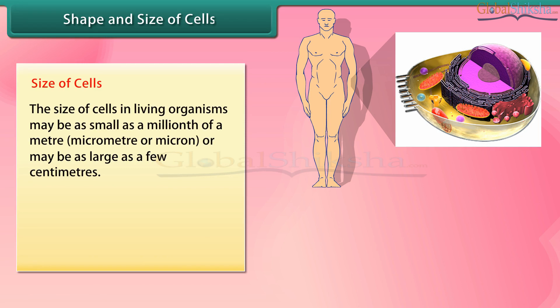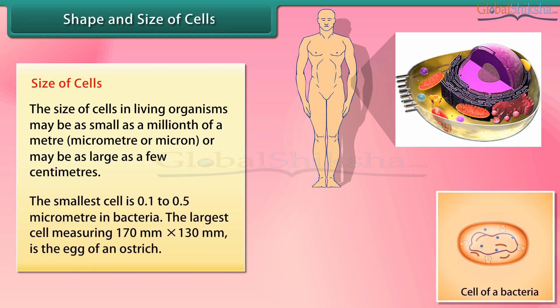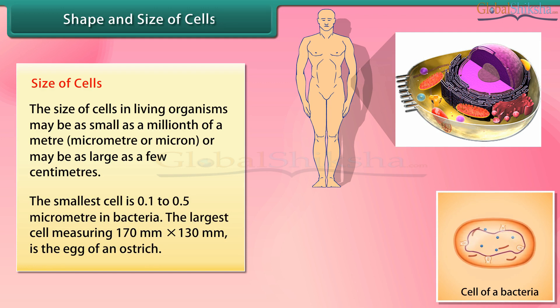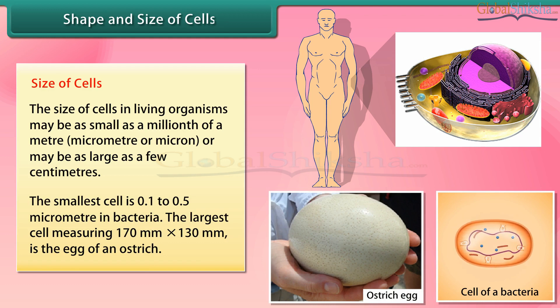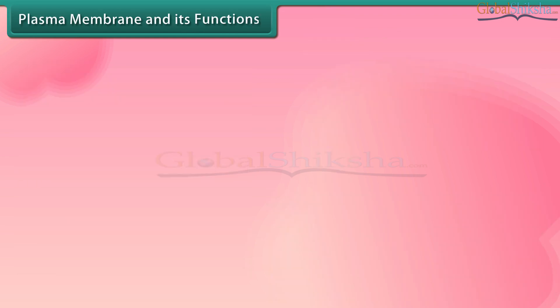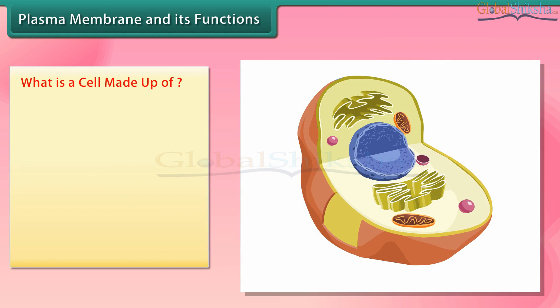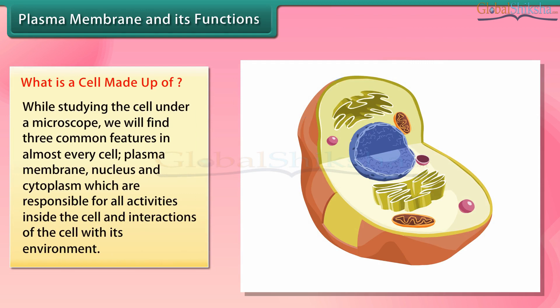Size of cells: The size of cells in living organisms may be as small as a millionth of a meter, that is a micrometer or micron, or may be as large as a few centimeters. The smallest cell is 0.1 to 0.5 micrometers, found in bacteria. The largest cell, measuring 170 mm by 130 mm, is the egg of an ostrich.